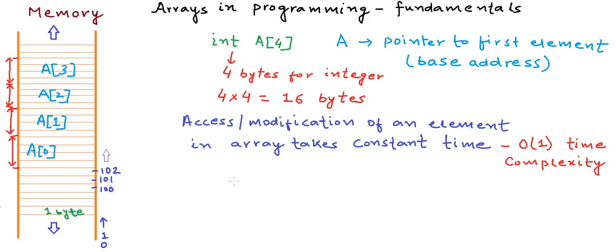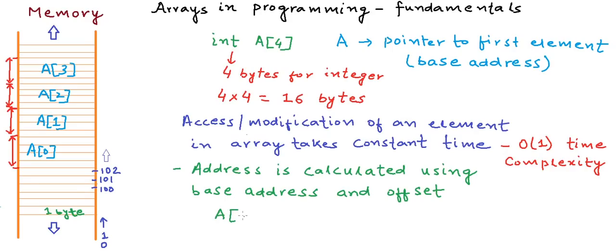So now it should be evident why accessing or modifying an element in array takes constant time. When we try to access an element in the array, the computer first calculates the address of this particular element using base address and offset. For example, if we want to access the fourth element in the array which is A3, then the address is calculated from the base address A by adding the offset 3, and the value at this particular location will give us A3.